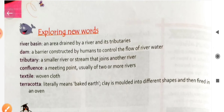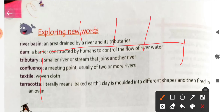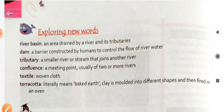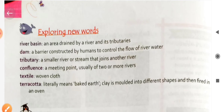When we build a barrier on a river to check the water behind it, that is called a dam. A tributary is a smaller river or stream that joins another river. A confluence is the meeting point where two or more rivers meet at a place.